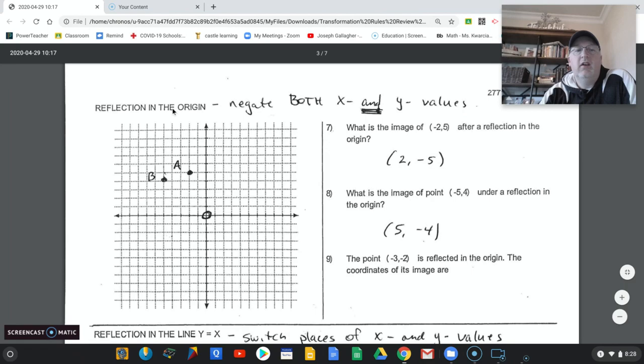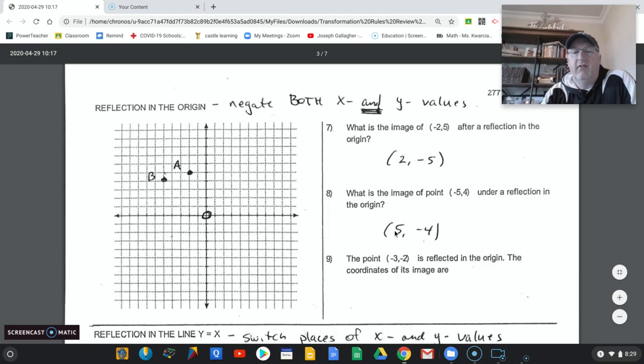Or, by rule, we negate both the x and the y values. I saw some of the work that people are sending me pictures of. Reflections through the origin and reflections through the line y equals x. Those are the two most people get wrong. They kind of mix them up. Origin, you're going to negate both of them. And you're going to do negative 2, 5 turns into 2, negative 5. See how both their signs change? Negative 5, 4 turns into 5, negative 4. So what would happen to the point negative 3, 2 at number 9?